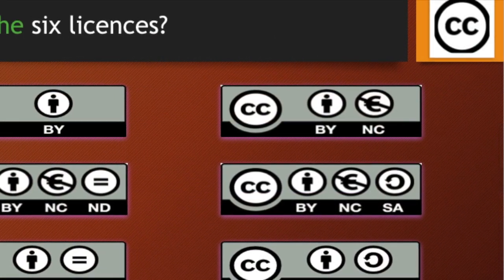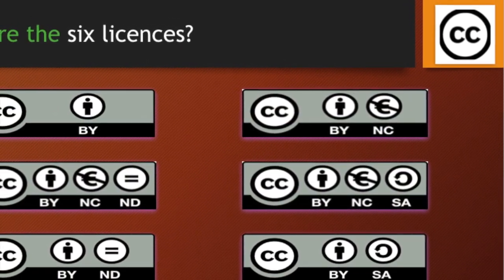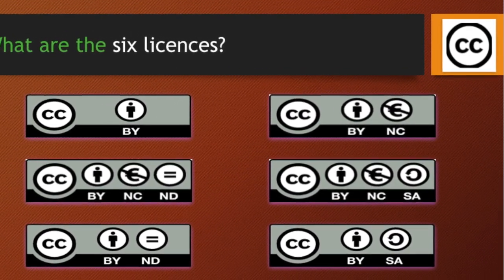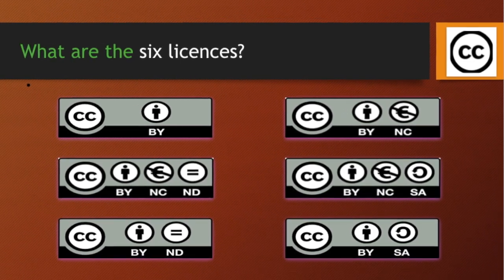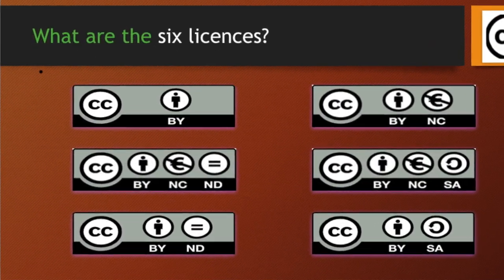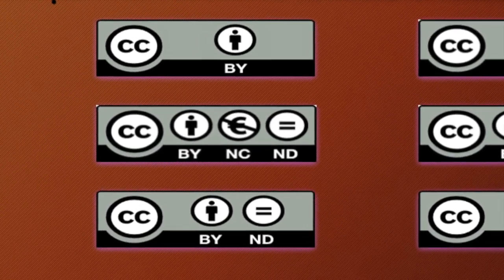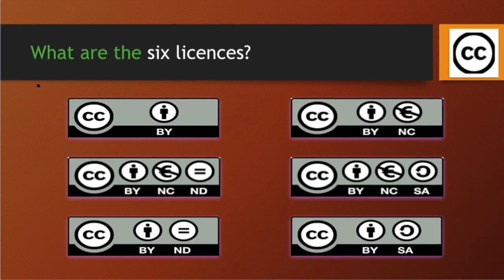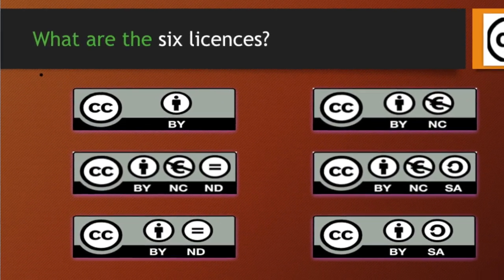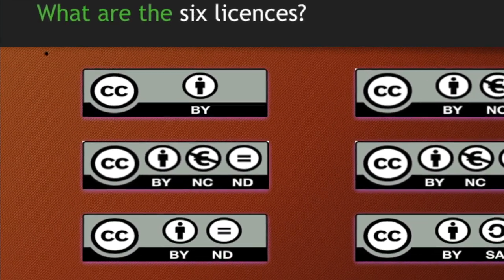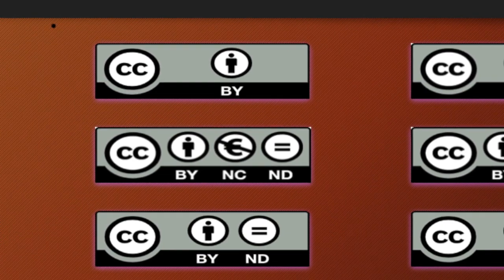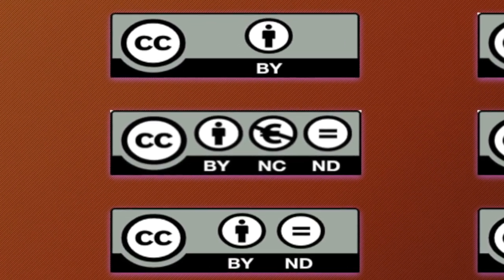The second license is CC BY-NC, which says you can use that content and modify it, but you can never sell the final outcome. The third license is non-commercial non-derivative (CC BY-NC-ND), meaning you can neither derive anything out of it nor sell the content or final product — you have to use it as-is and cannot translate the content. The fourth license is CC BY-NC-SA, meaning you cannot sell it commercially, but whatever will be the final outcome, you have to release it under a similar license.